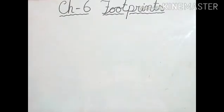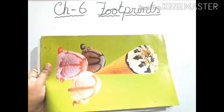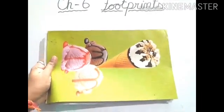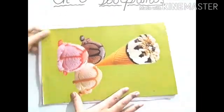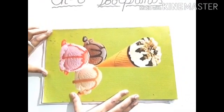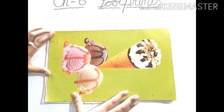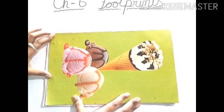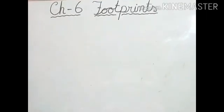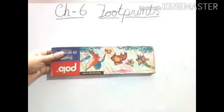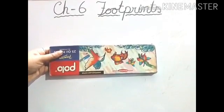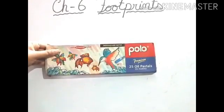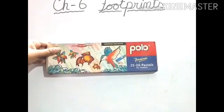Now next. See this copy. What is the shape of this copy? I am holding it. Yes, it is looking like a rectangle. Very good. And this one? Yes, it looks like a what? It is also rectangle. Very good.